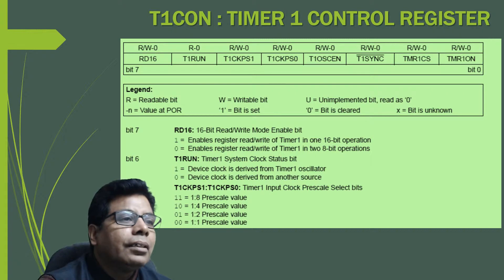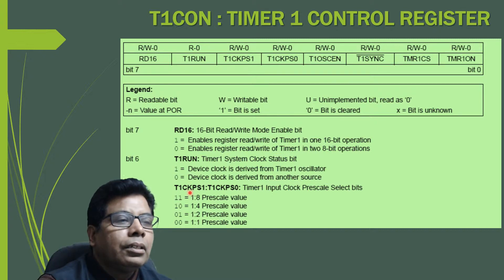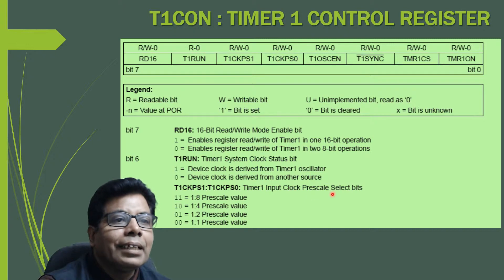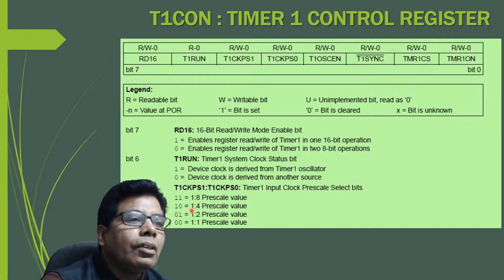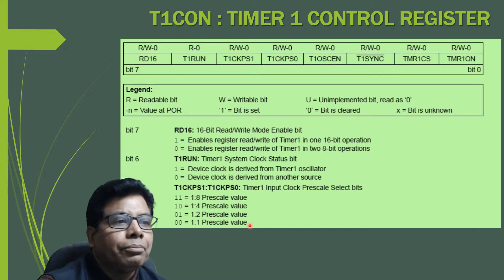Bits 5 and 4 are T1CKPS1 and T1CKPS0 — the Timer 1 input clock prescale select bits. There are four options: 1,1 gives a 1:8 prescale value; 1,0 gives 1:4; 0,1 gives 1:2; and 0,0 gives 1:1 prescale value.